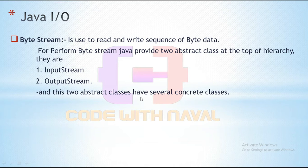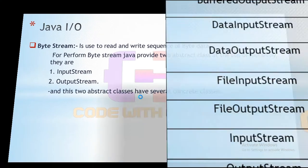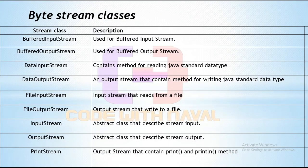Abstract classes are partially complete classes — we cannot create objects of abstract classes. Here you can see in this table we have a few byte stream classes: BufferedInputStream, BufferedOutputStream, DataInputStream, FileInputStream, and PrintStream. All these classes come under byte stream classes. We will discuss each and every class with a practical example.